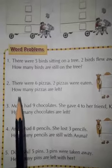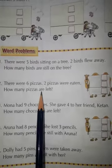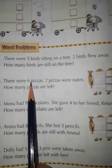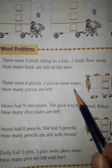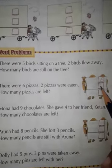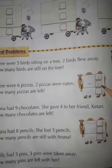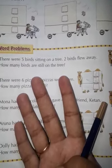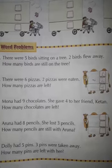Next question. There were six pizzas. Two pizzas were eaten. How many pizzas are left? How many total pizzas? Six. So you write here six. Then two pizzas were eaten, so you write here two. Now you subtract two from six. You start counting after two till six: three, four, five and six. How many fingers are open here? Four fingers. So you write here four. It means four pizzas are left out of six.